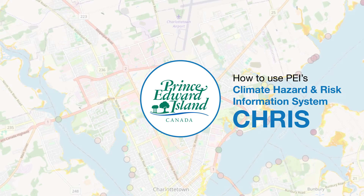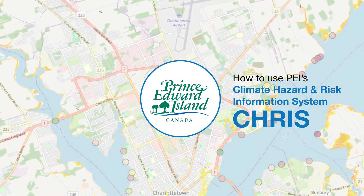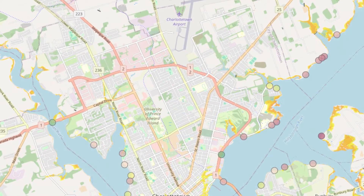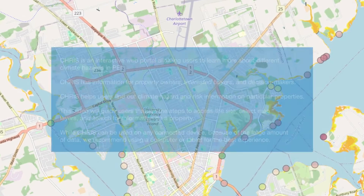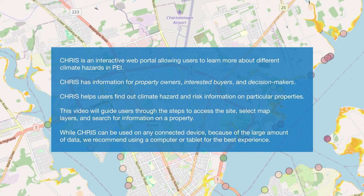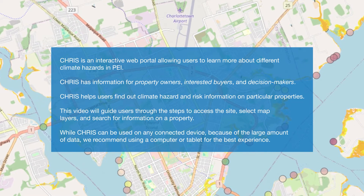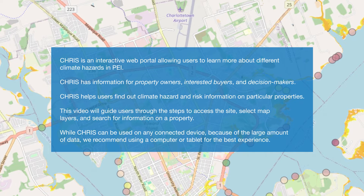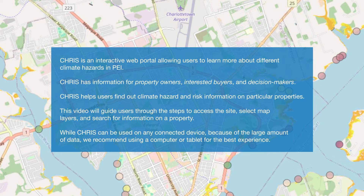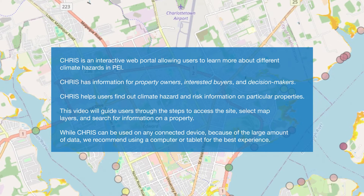How to use PEI's Climate Hazard and Risk Information System, CRIS for short. CRIS is an interactive web portal allowing users to learn more about different climate hazards in PEI. CRIS has information for property owners, interested buyers, and decision makers.